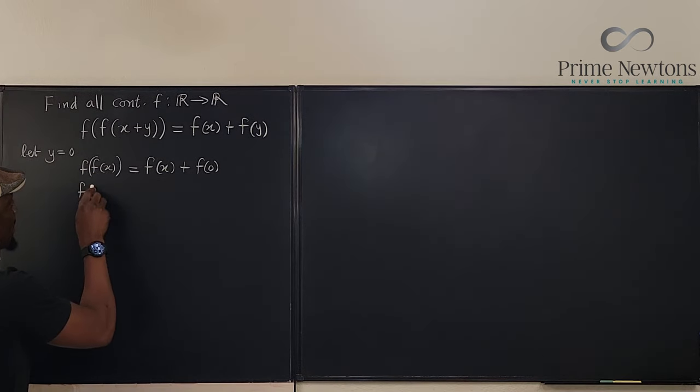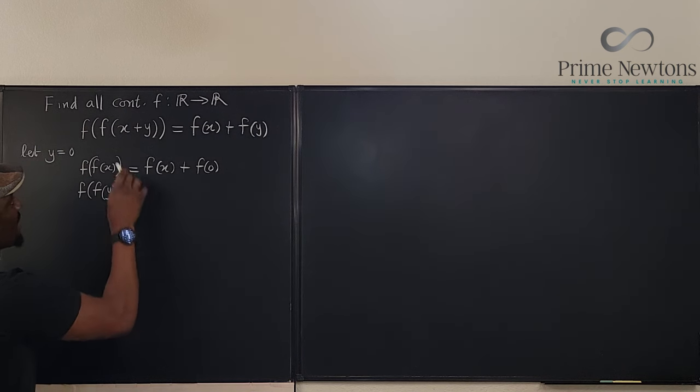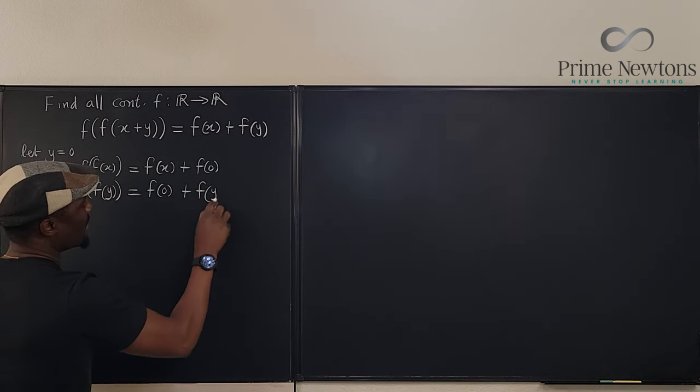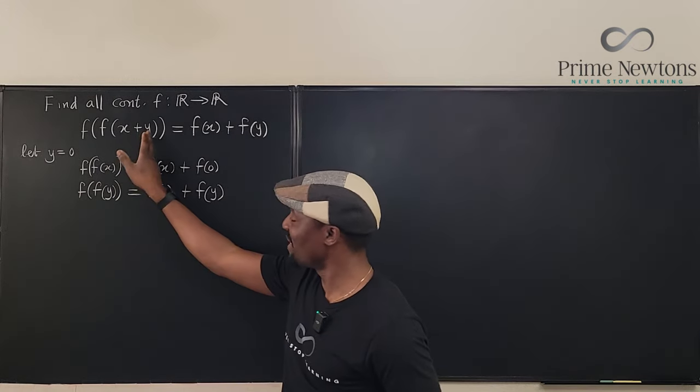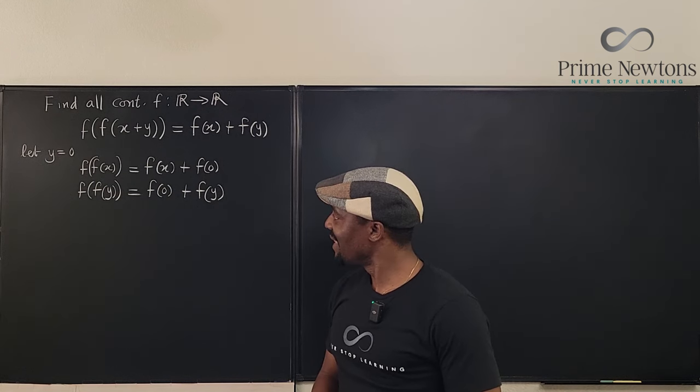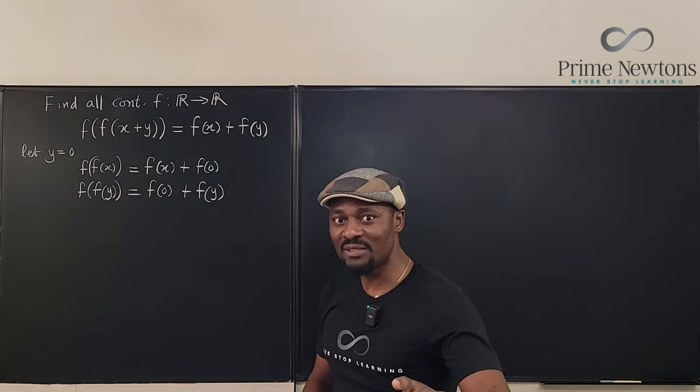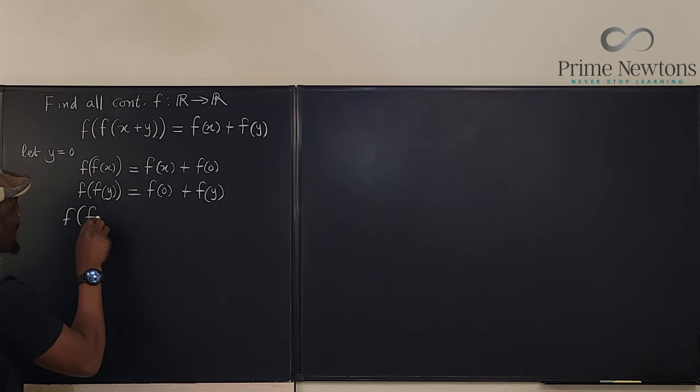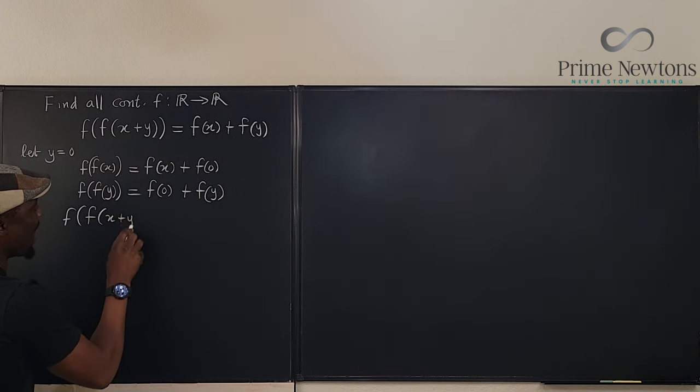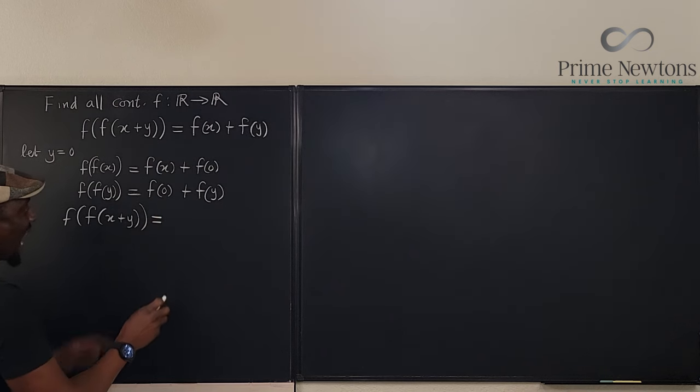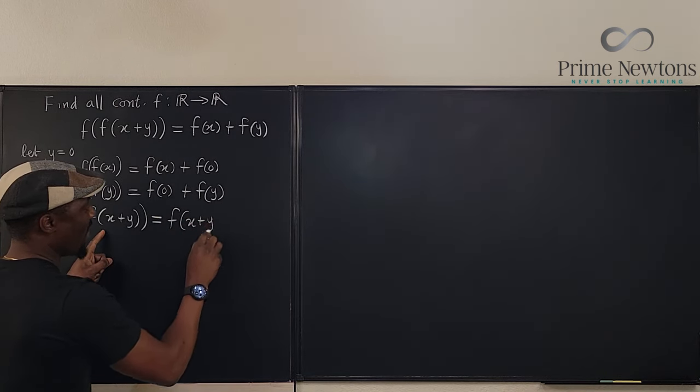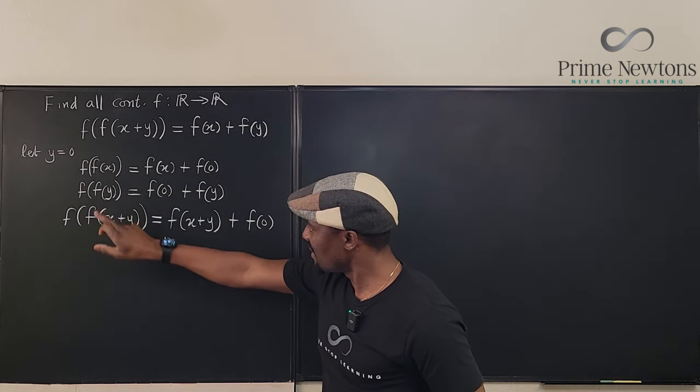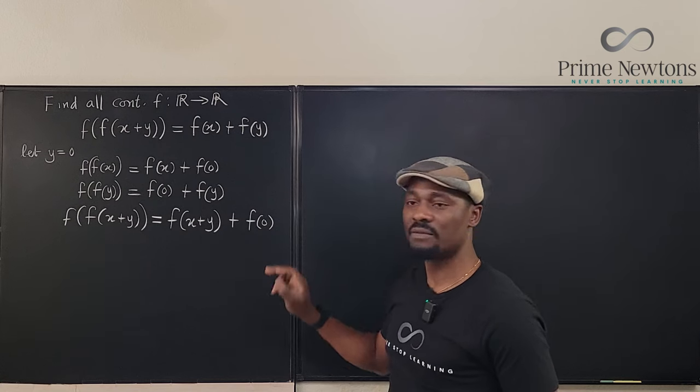Look, if I switch it to f of f of y, if I make this zero, I'm going to end up with f of zero plus f of y. Now I'm trying to get rid of this x plus y or use the x plus y. That tells me that f of f of x plus y. That's crazy. f of f of x plus y, which is what we had originally is actually f of x plus y plus f of zero. Do you see what just happened?